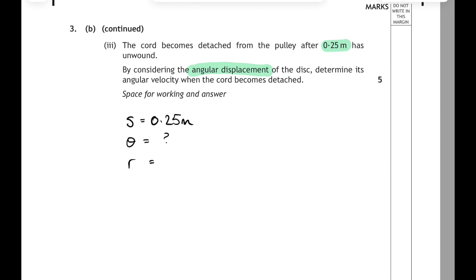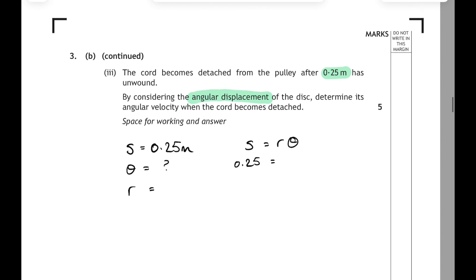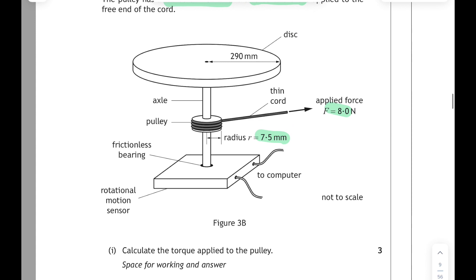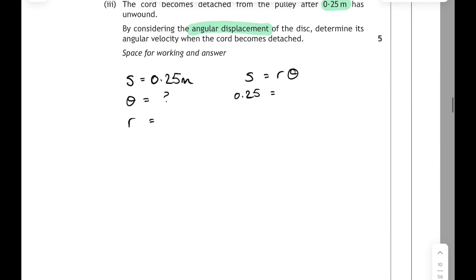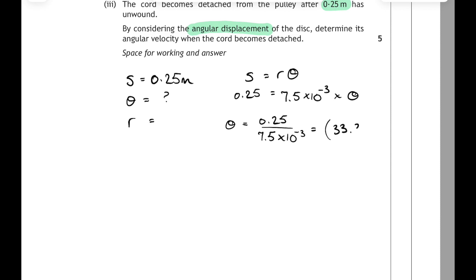The first thing we have to do is convert the 0.25m, which is a linear displacement, into an angular displacement. The relationship that links the two is S = Rθ. Our linear displacement is 0.25m and the radius is the radius of the pulley — 7.5×10⁻³ m. Rearranging, θ = 0.25 ÷ (7.5×10⁻³), which gives 33.333... recurring. That's not a final answer, so keep it in brackets and don't round it.